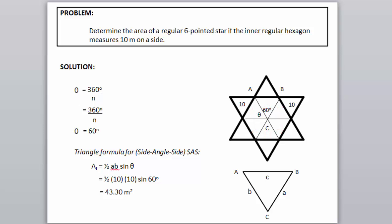So we have, if we are going to solve for theta, simply we have 360 divided by n, or 360 divided by the number of sides of the hexagon. So 360 divided by 6 is equal to 60 degrees.